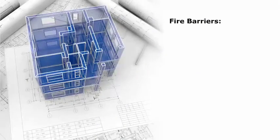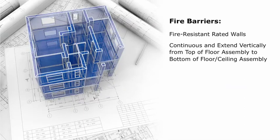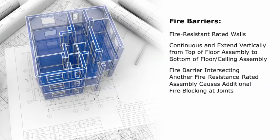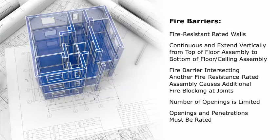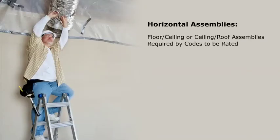Fire barriers are walls with a fire resistant rating that in most cases must be continuous, extending vertically from the top of a floor assembly to the bottom of a floor or ceiling assembly. For example, a fire barrier would extend through a suspended ceiling to the slab above. When a fire barrier intersects another fire resistance rated assembly, additional fire blocking is required at the joint. The number of openings, including doors and windows, is also limited and must be rated.